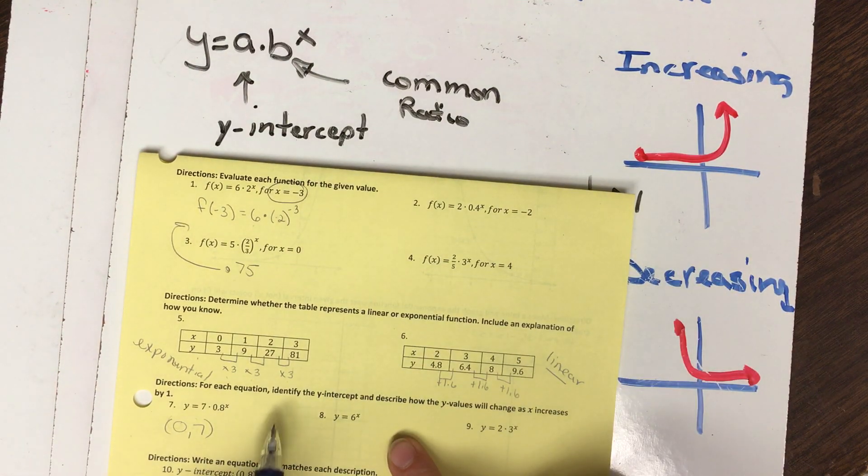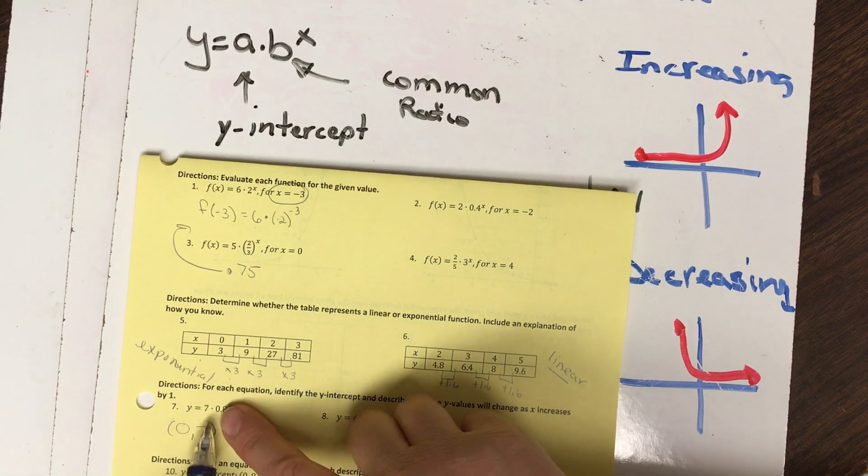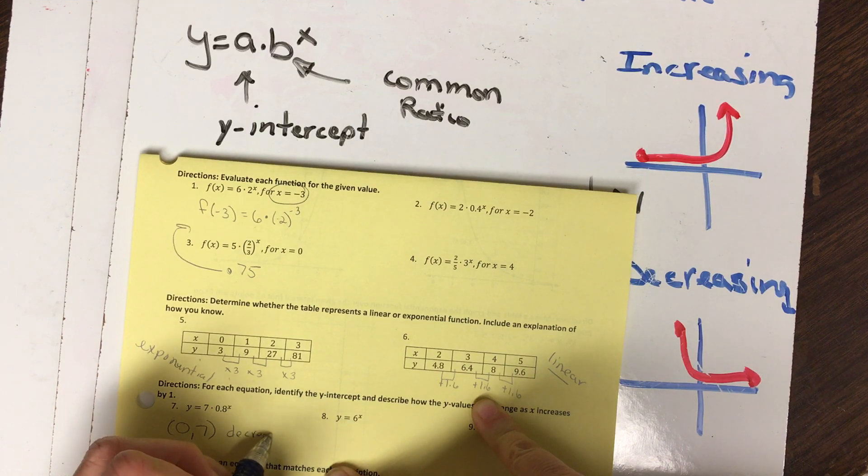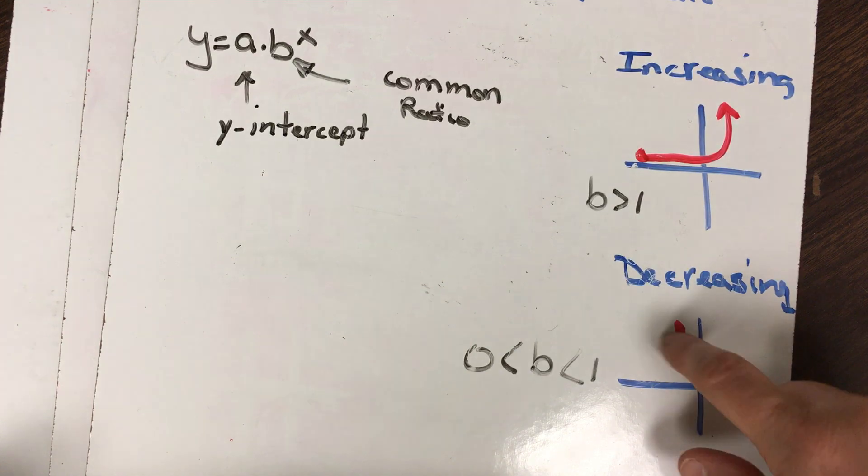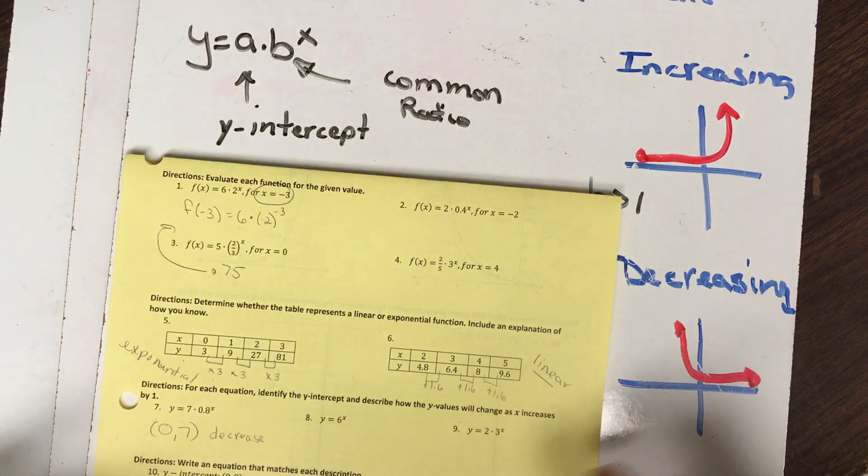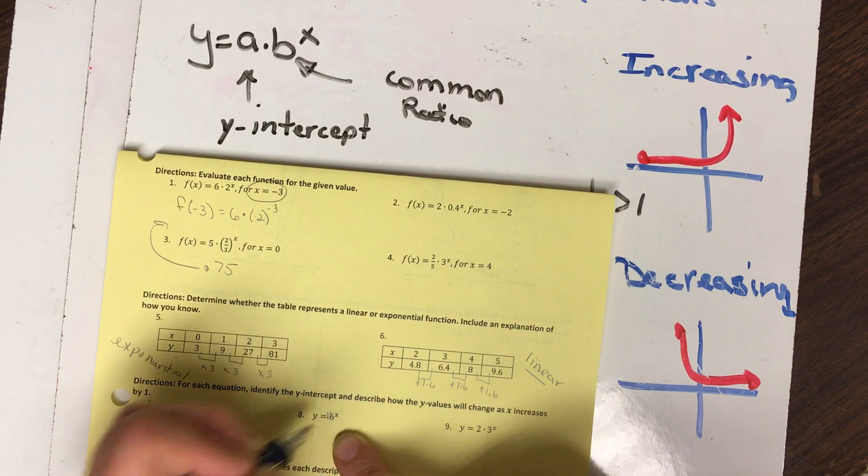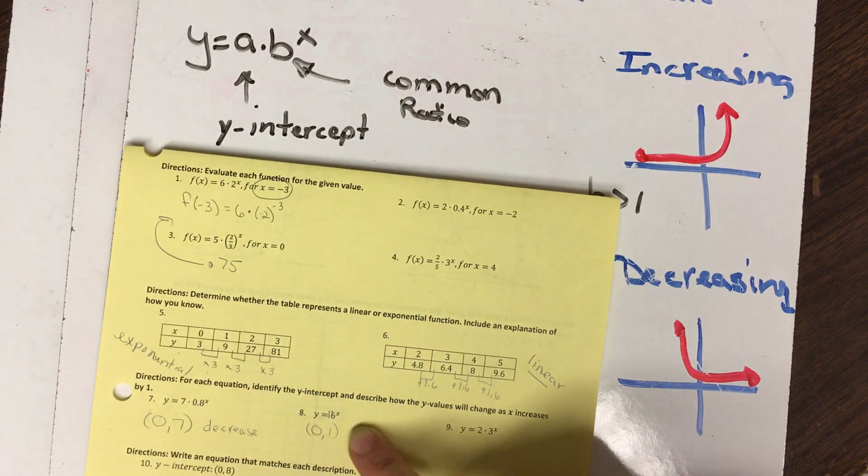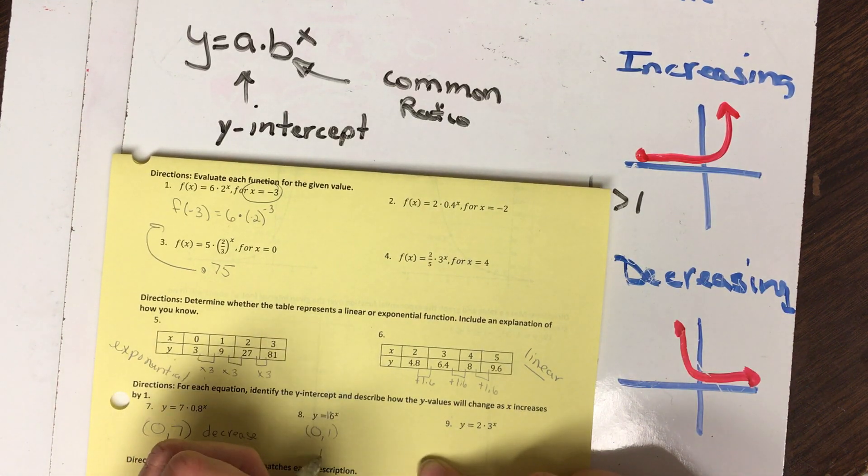And then describe if the values will increase. So this is 0.8, so this is going to decrease, because it would be decreasing less than 1. And here, they have an invisible 1 in front of it, so my y-intercept is 0,1, and it's a 6, so we would be increasing.